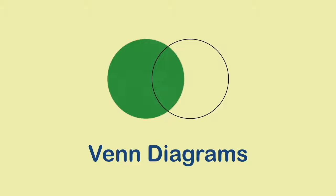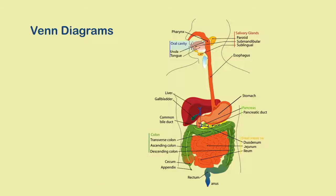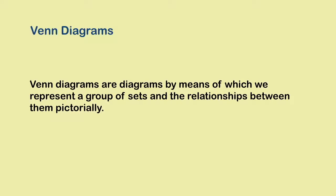In order to understand the role of Venn diagrams in the study of set theory, one only needs to think of the role of maps in geography or of diagrams in biology, or for that matter, the role of infographics in the presentation of information today. Simply put, Venn diagrams are diagrams with the help of which we represent different sets and the relationships between them pictorially.